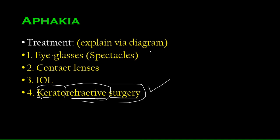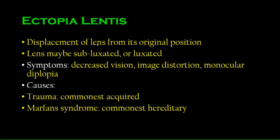The book lists advantages of each treatment, but I won't go into those details here to save time. I'm moving on to the next disorder: ectopia lentis. Have you heard of ectopic pregnancy? That's when the fertilized egg implants somewhere other than the endometrial wall. 'Ectopia' means something out of place, and 'lentis' refers to the lens.